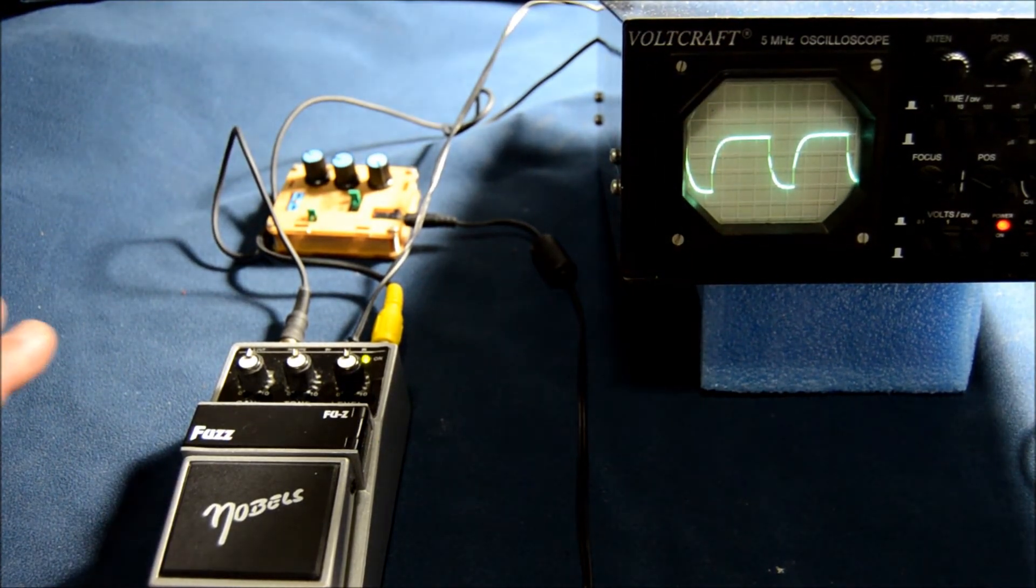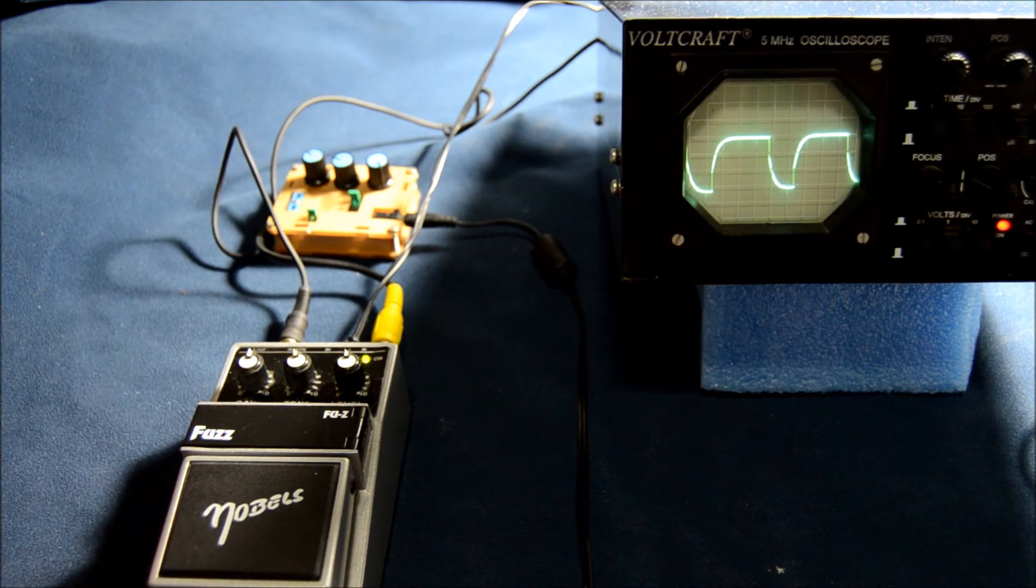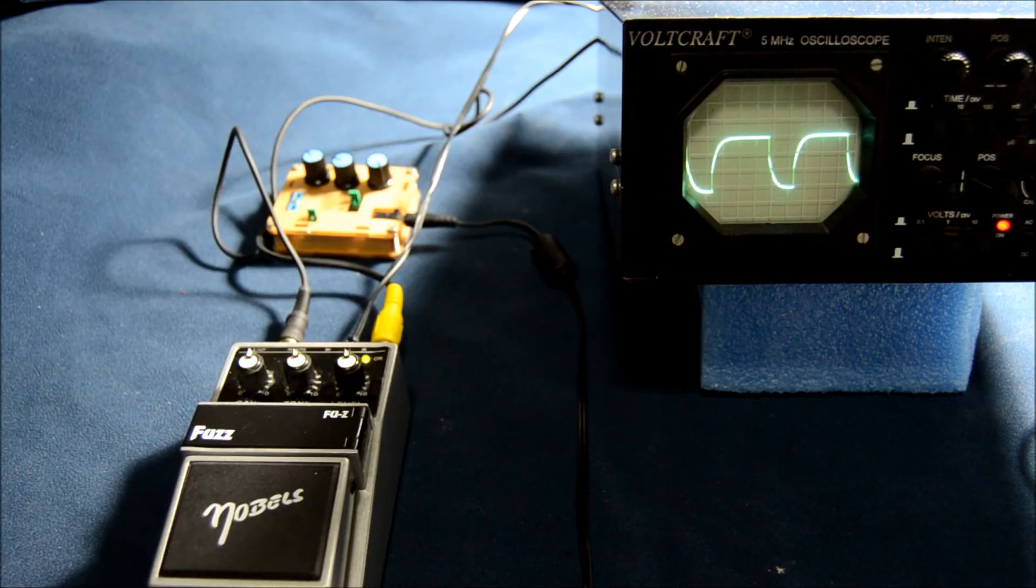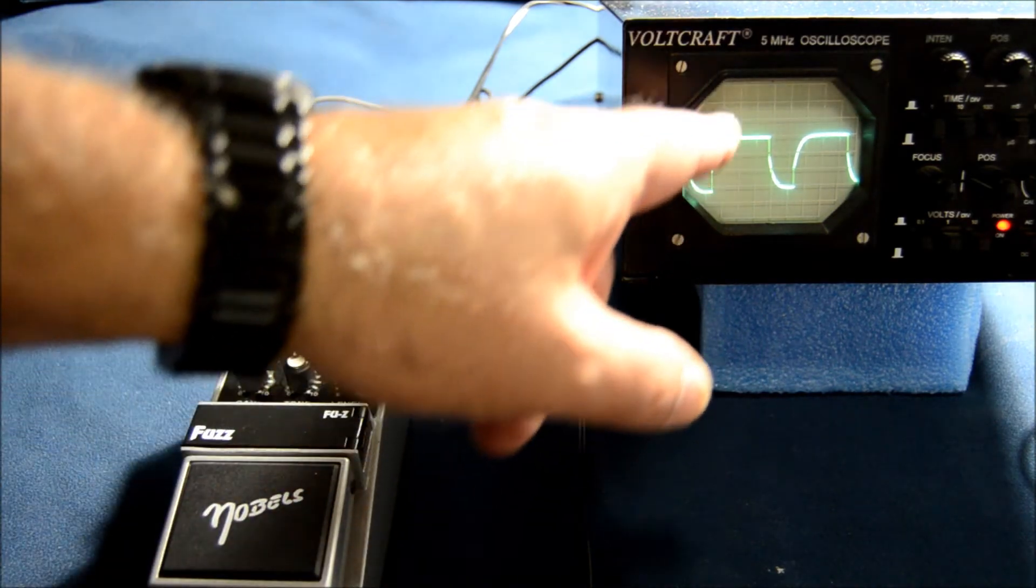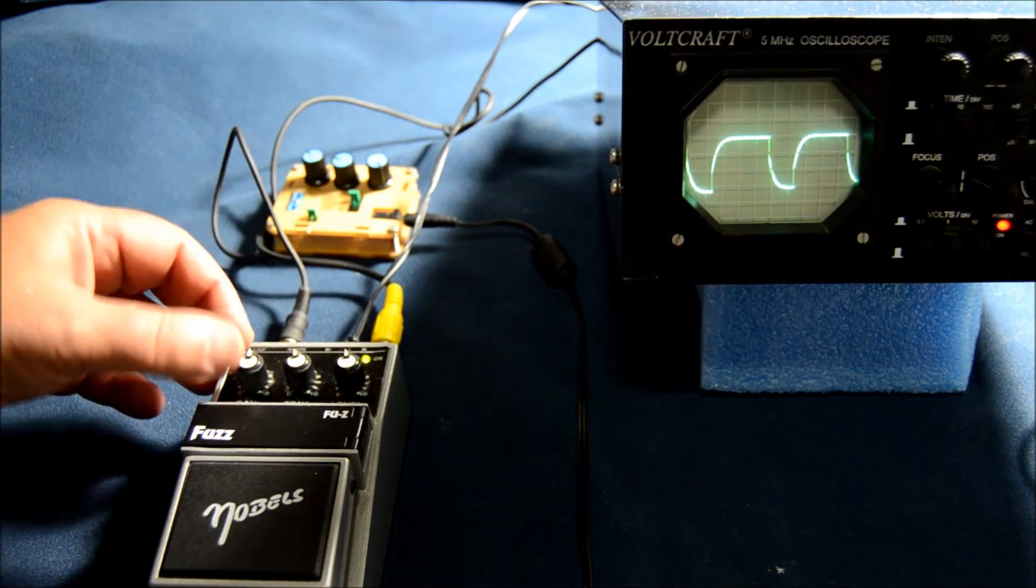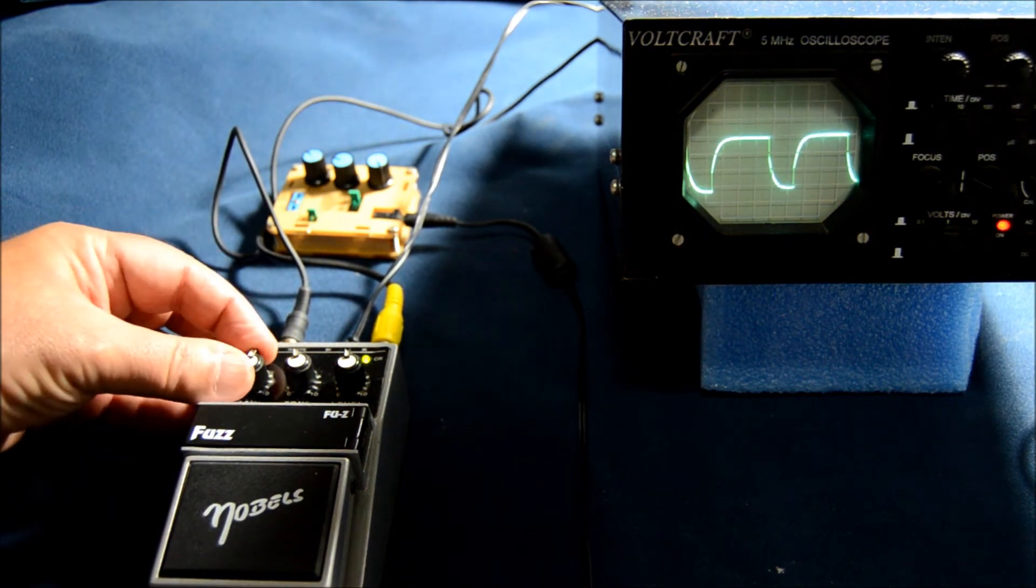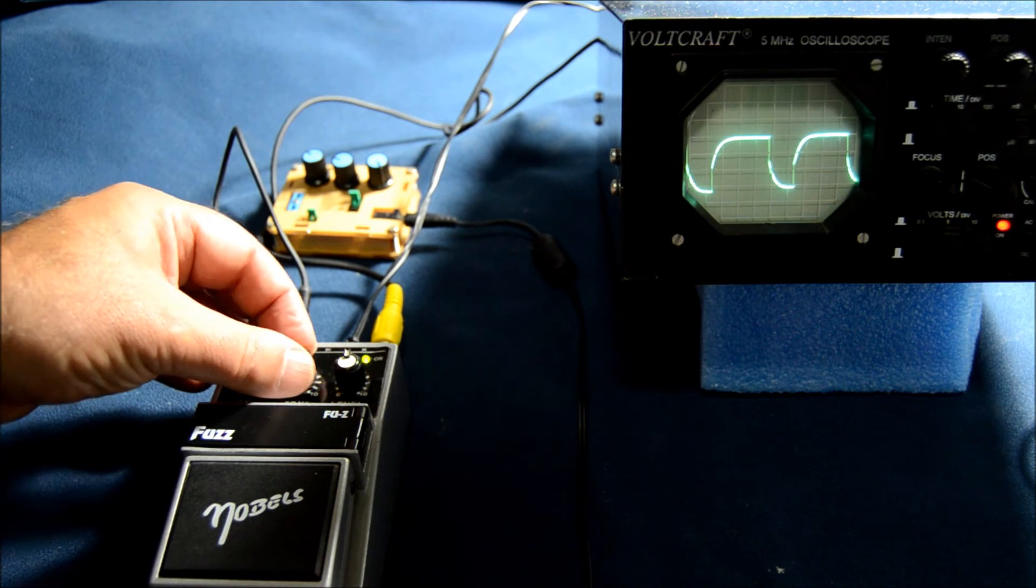This pedal is from the Nobles company, a vintage pedal from the same era as the ODR-1. This is a fuzz and it has sort of the opposite waveform of my pedal, which is a square wave with a sine but differently placed. Let's adjust the gain. It doesn't change the tone much.